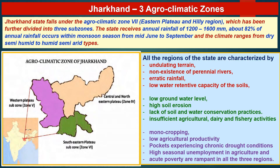All regions of the state share characteristics including undulating terrain, non-existence of perennial rivers, erratic rainfall, low water-retentive capacity of soils, low groundwater level, high soil erosion, lack of soil and water conservation practices, insufficient agriculture, dairy and fisheries activities, mono-cropping pattern, low agricultural productivity, pockets experiencing chronic drought conditions, high seasonal unemployment in agriculture, and acute poverty rampant in all three regions.